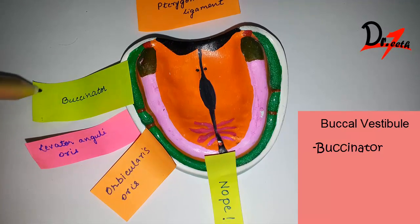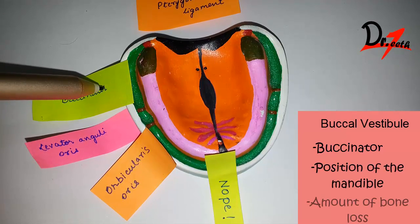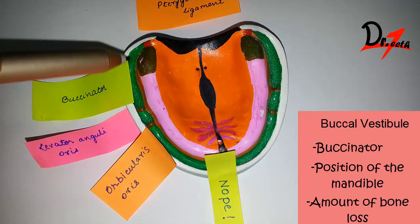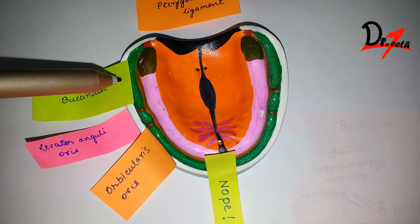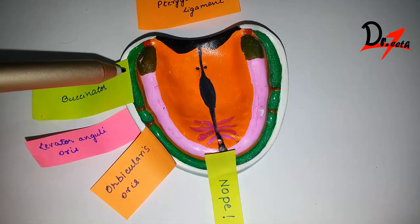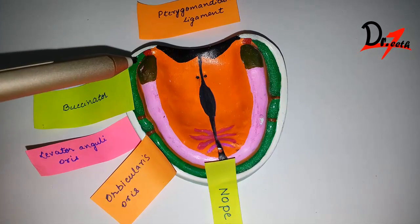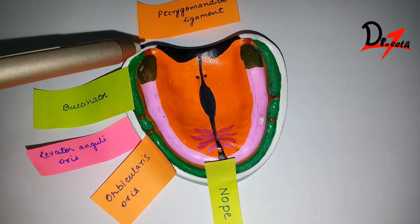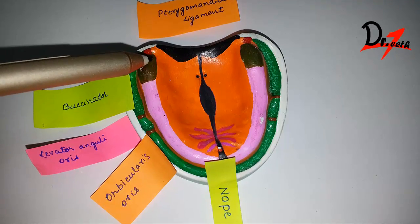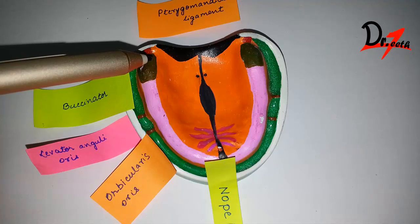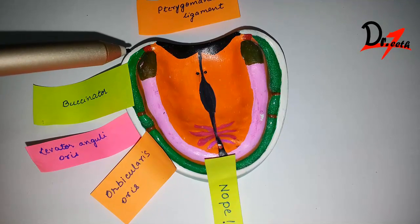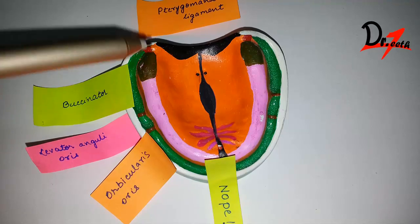The size of the buccal vestibule varies with the contraction of the buccinator muscle, the position of the mandible, and the amount of bone lost from the maxilla. When the mandible moves, this area is modified — that is why we ask the patient to open his mouth and pull the mandible left and right so that this area is properly recorded during border molding. The size and shape of the distal end of the buccal flange must be adjusted to accommodate the movement of the coronoid process of the mandible and the masseter muscle. When the mandible is opened wide and moved laterally, the width and height of this area is reduced. If you record this area properly, the retention and stability of the denture is greatly increased.